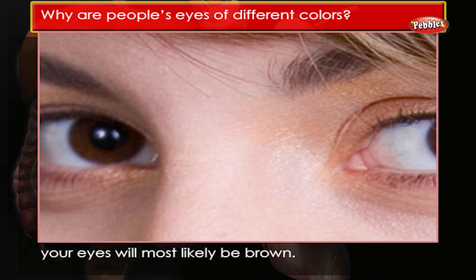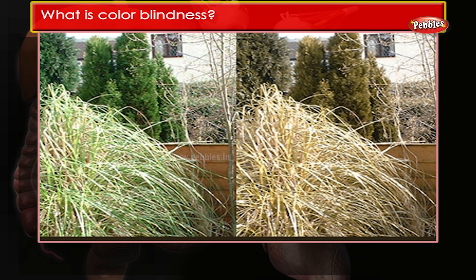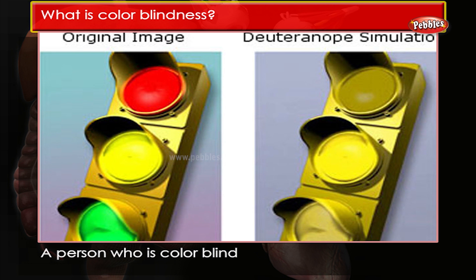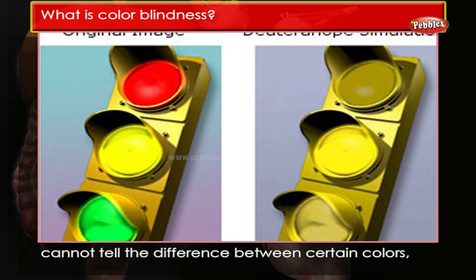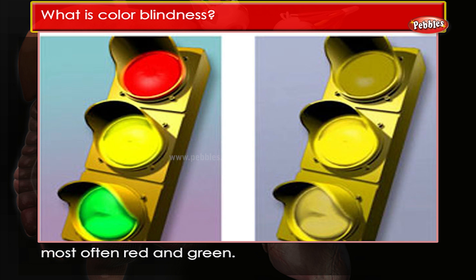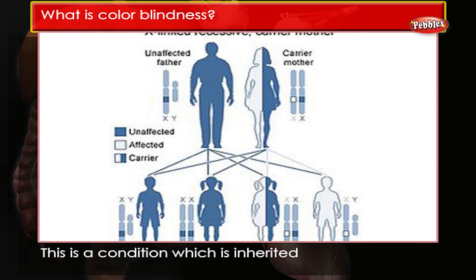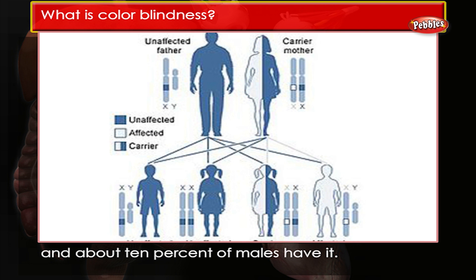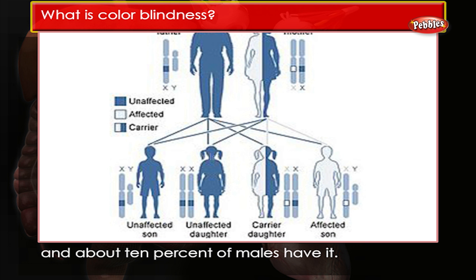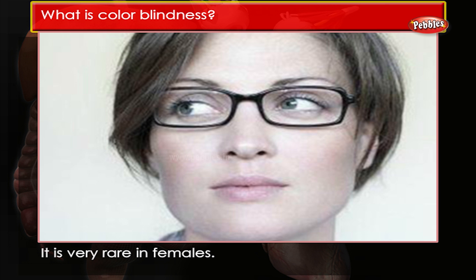What is colorblindness? A person who is colorblind cannot tell the difference between certain colors — most often red and green. This is a condition which is inherited, and about 10% of males have it. It is very rare in females.